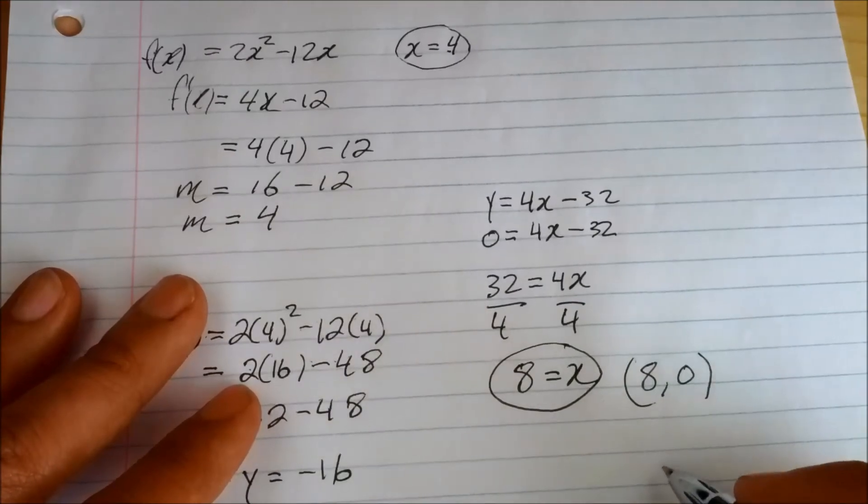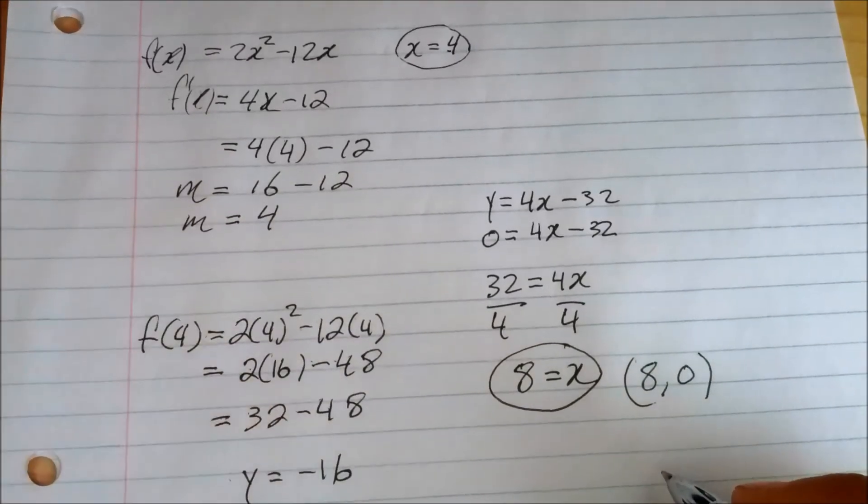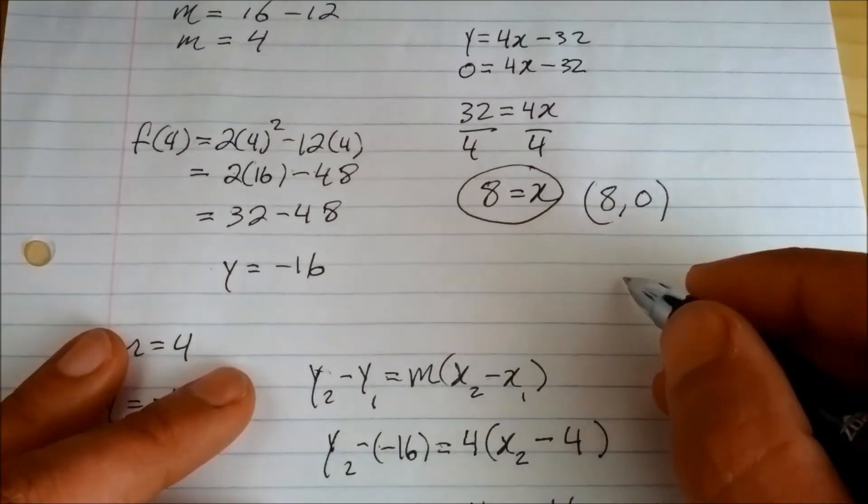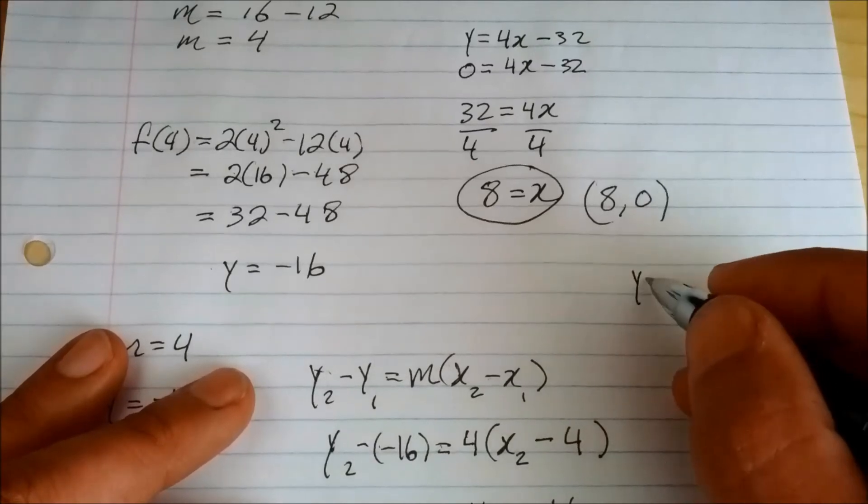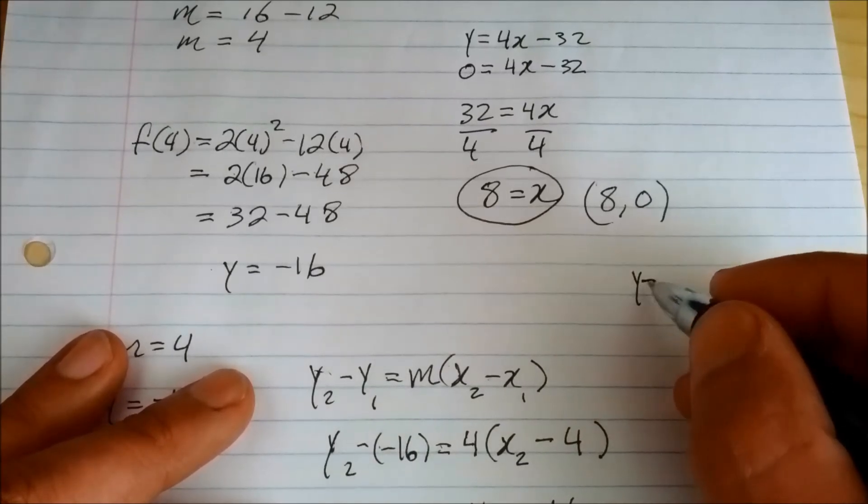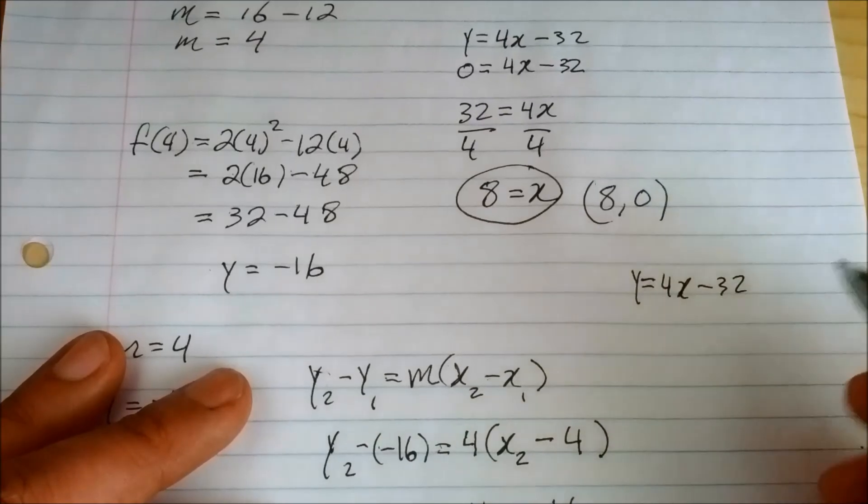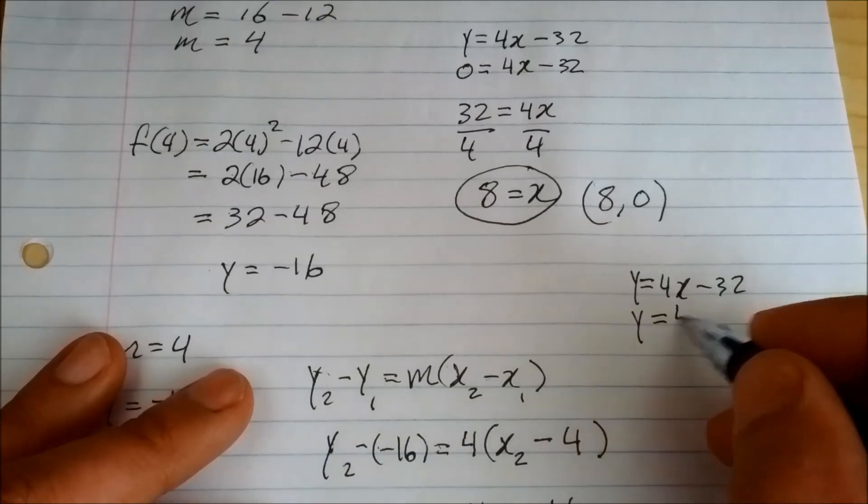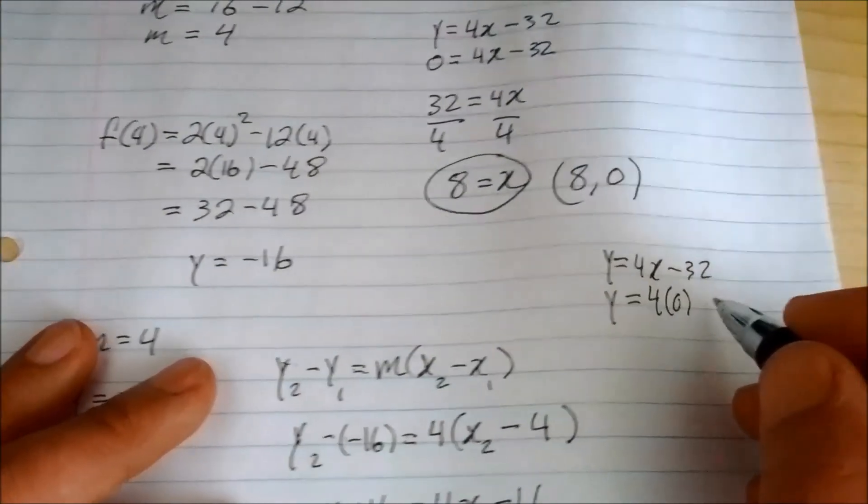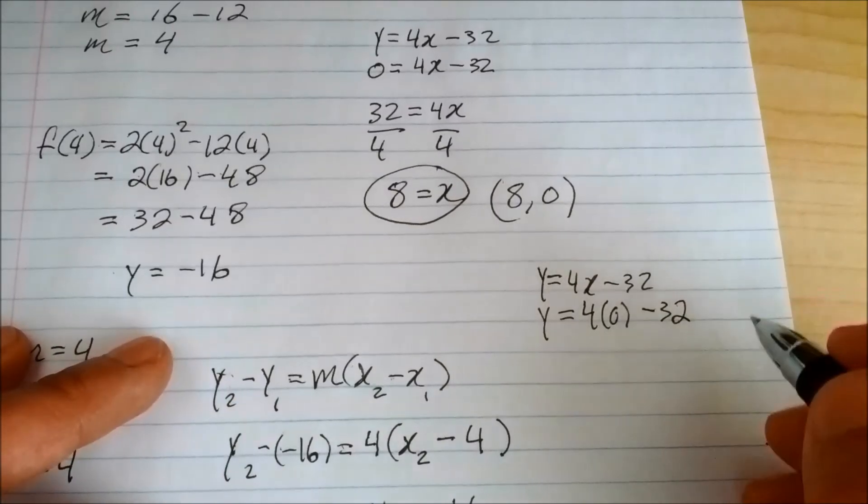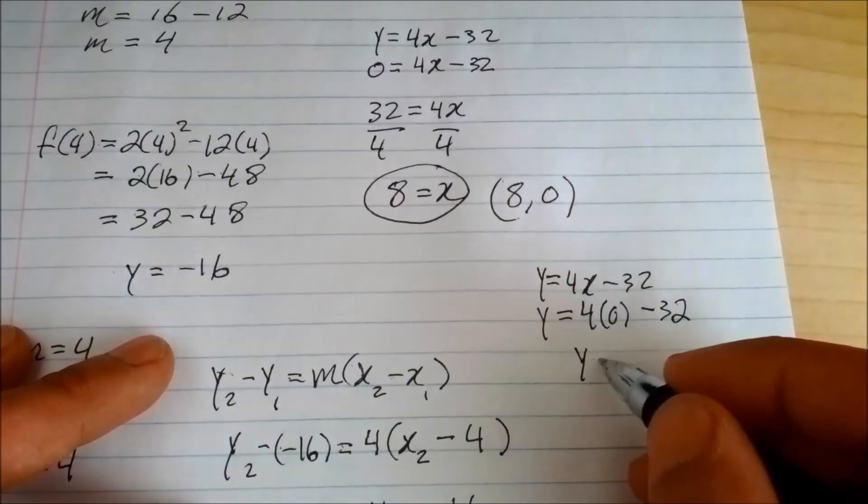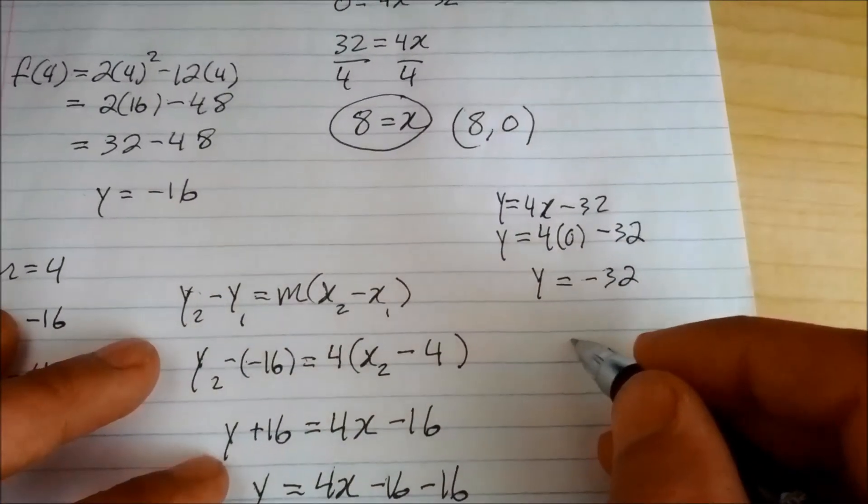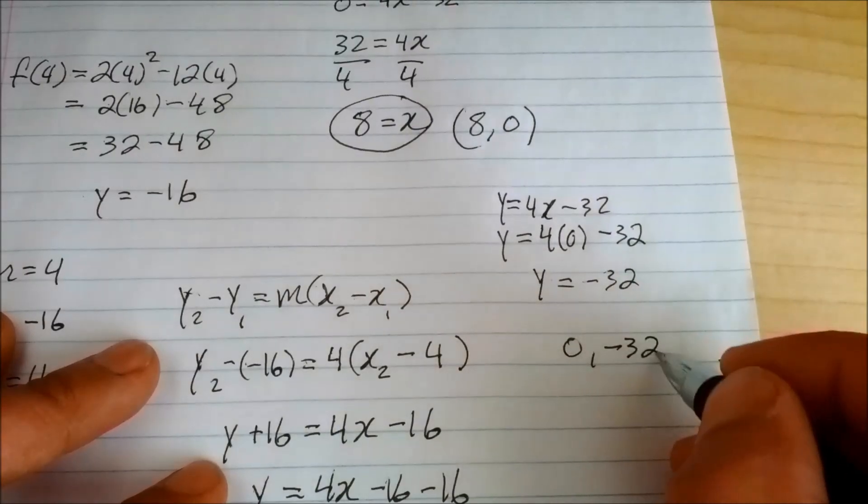And the y axis is the same way. You let x be 0 and solve for y. So let me write this equation here, y equals 4x. So we let x be 0 and solve for y. So y of course is going to be negative 32, so it's going to cross the y axis at 0 and negative 32.